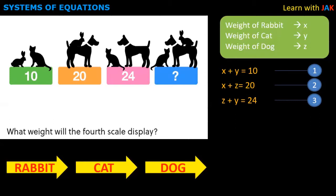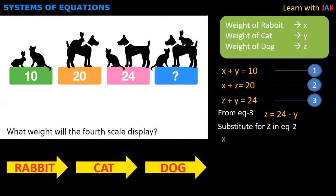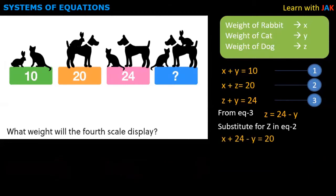We have three equations. We have solved the problem in class. The third equation is z equals 24 minus y. I will solve the problem in class. This is z equals 24 minus y.